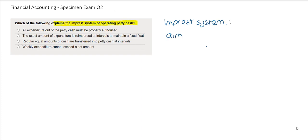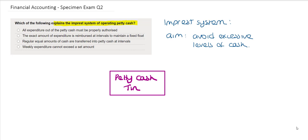is to avoid excessive levels of cash within the business. So how does the imprest system work? Petty cash will be stored within a business. There will be a fixed float of cash that is kept in the petty cash tin.